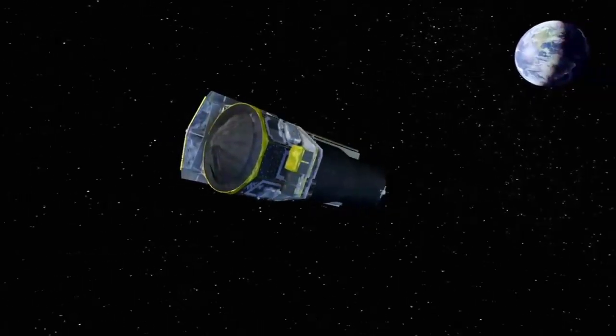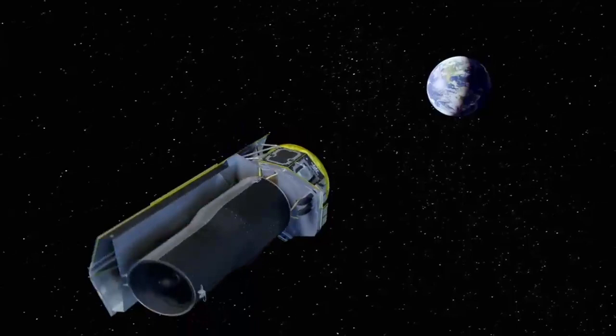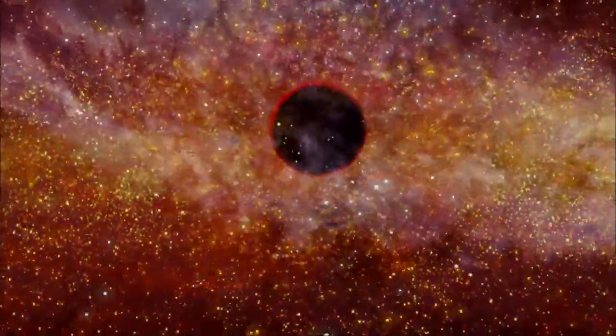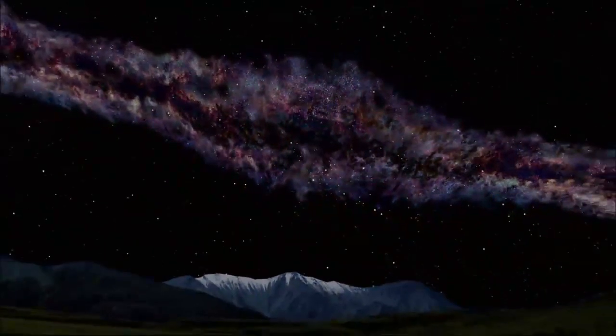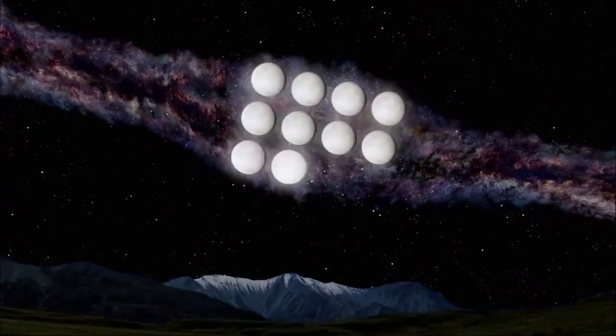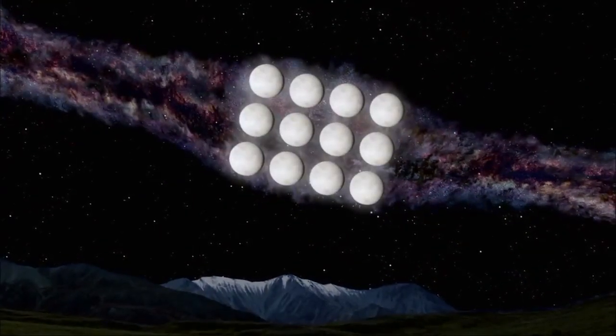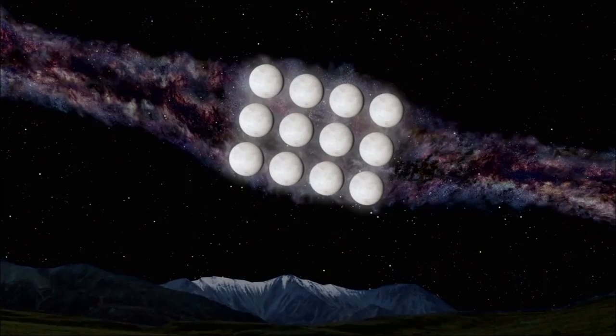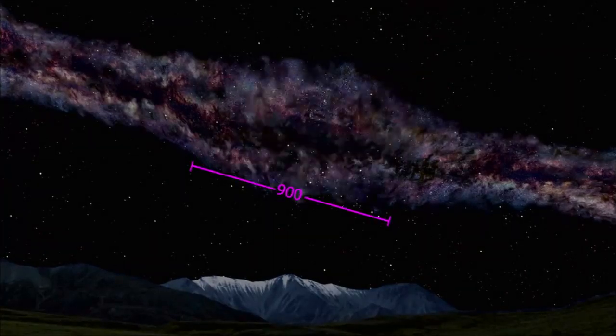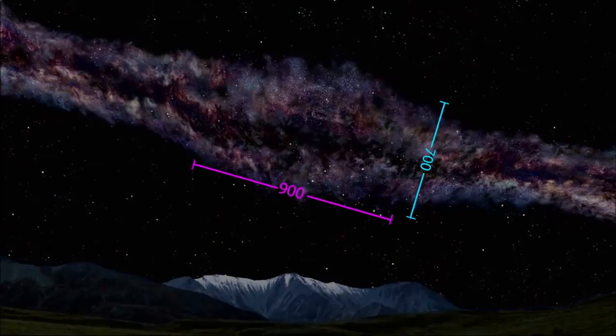This high resolution mosaic was assembled from roughly 12,000 individual images taken from the Spitzer Space Telescope. Even though that sounds like a lot of data, it only took about 16 hours of telescope time. This particular region of the galactic center spans an area of the sky that's equivalent to four full moons in one direction and three full moons in the other. That's the equivalent of 900 light years across by 700 light years high.